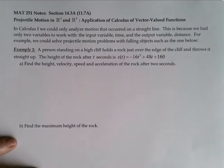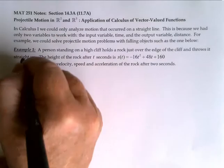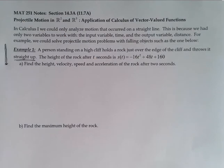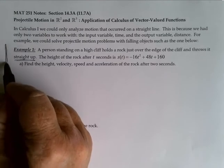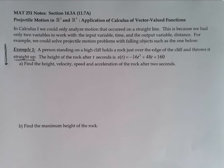You actually worked with some types of projectile motion problems in Calculus 1, but specifically you were only able to do projectile motion in one dimension. In Calc 1, the object that you were throwing had to go straight up and straight down. In this section, we'll be able to deal with additional complexity now that we've got vector-valued functions — not only the up and down direction, but also a horizontal component and potentially even a side-to-side component if we go to three dimensions.